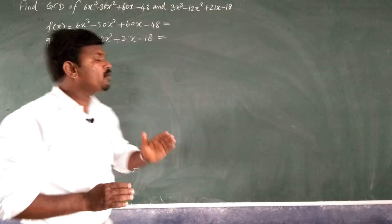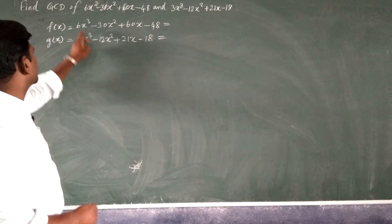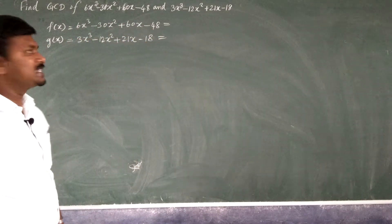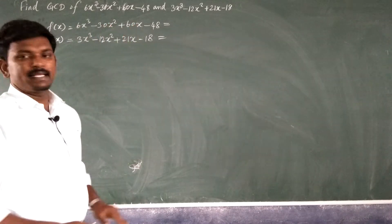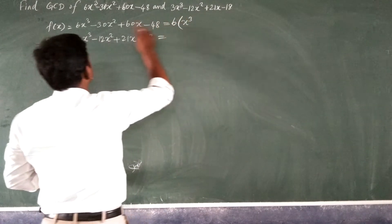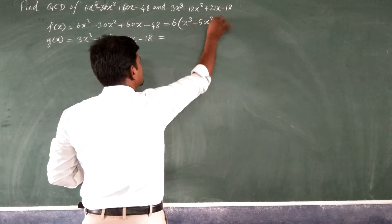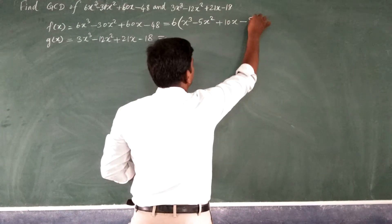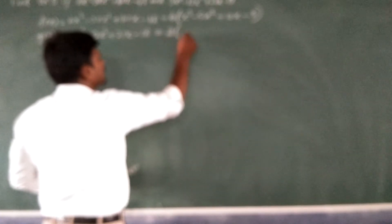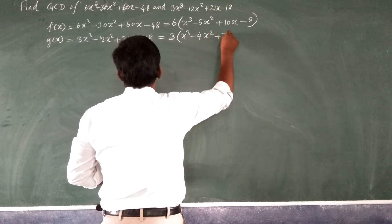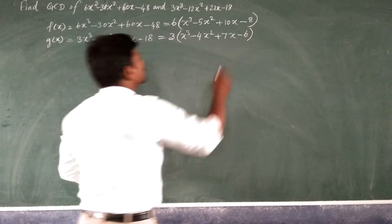After writing the polynomials, check if there is any common factor for all the terms. For f(x), all coefficients are multiples of 6, so take 6 as common factor: 6(x³ - 5x² + 10x - 8). For g(x), all terms divide by 3, so take 3 as common factor: 3(x³ - 4x² + 7x - 6).